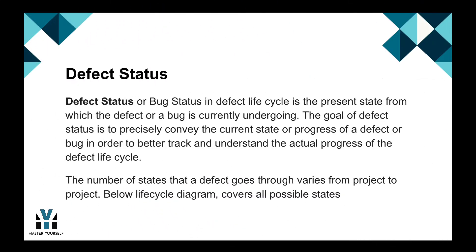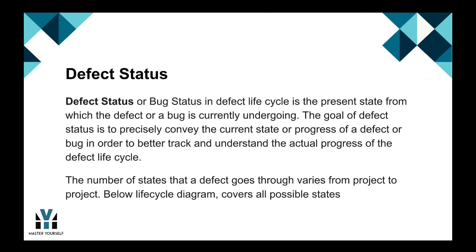Defect status. Defect status or bug status in defect lifecycle is the present state which the defect or a bug is currently undergoing. The goal of defect status is to precisely convey the current state or progress of a defect or a bug in order to better track and understand the actual progress of the defect lifecycle. The number of states that a defect goes through varies from project to project.